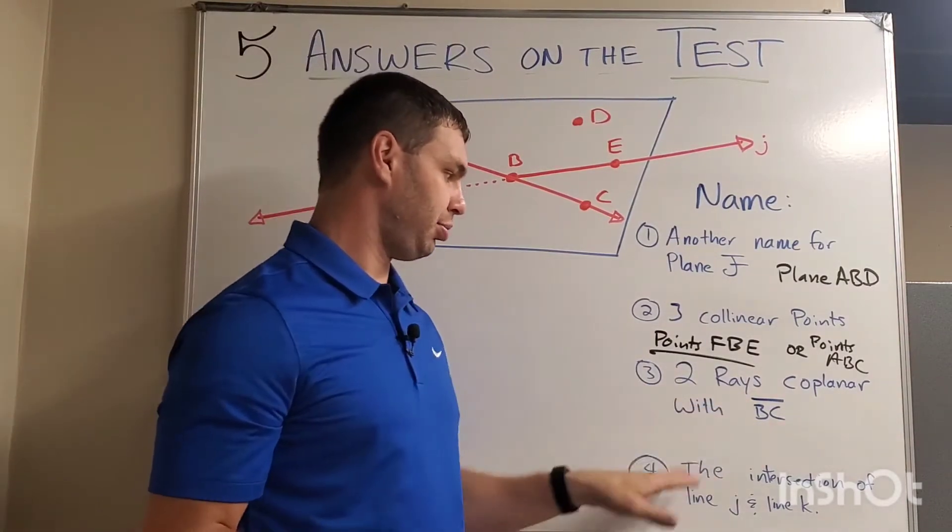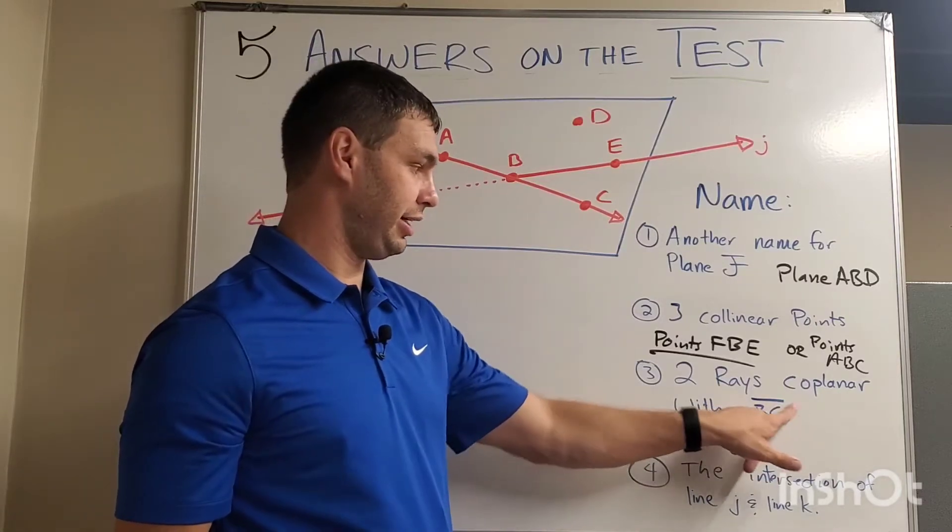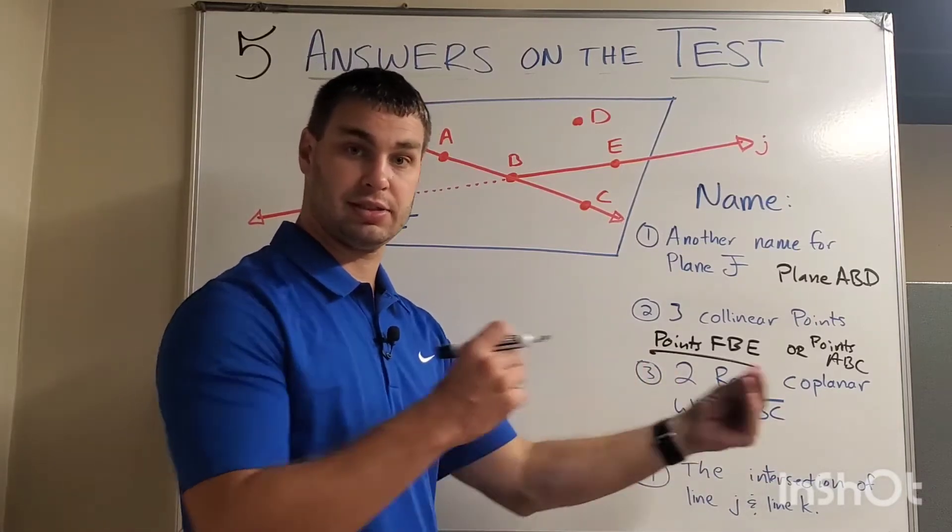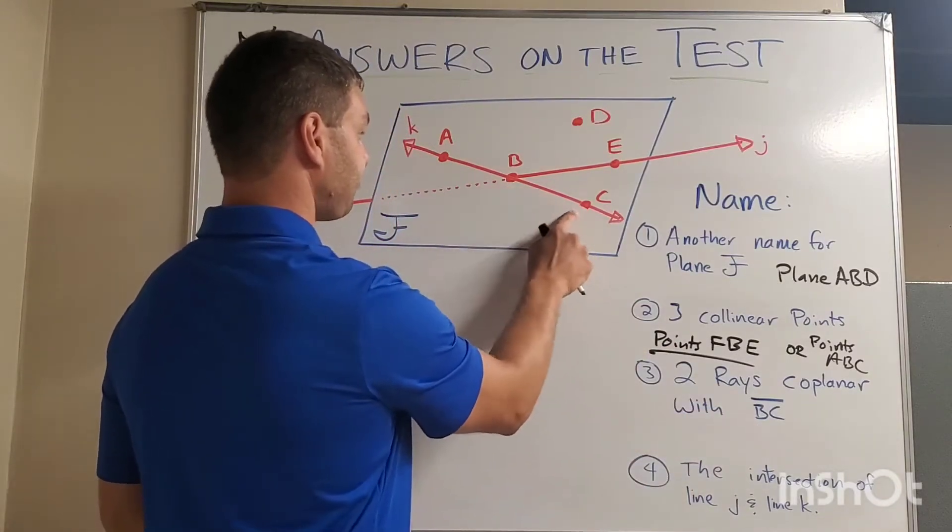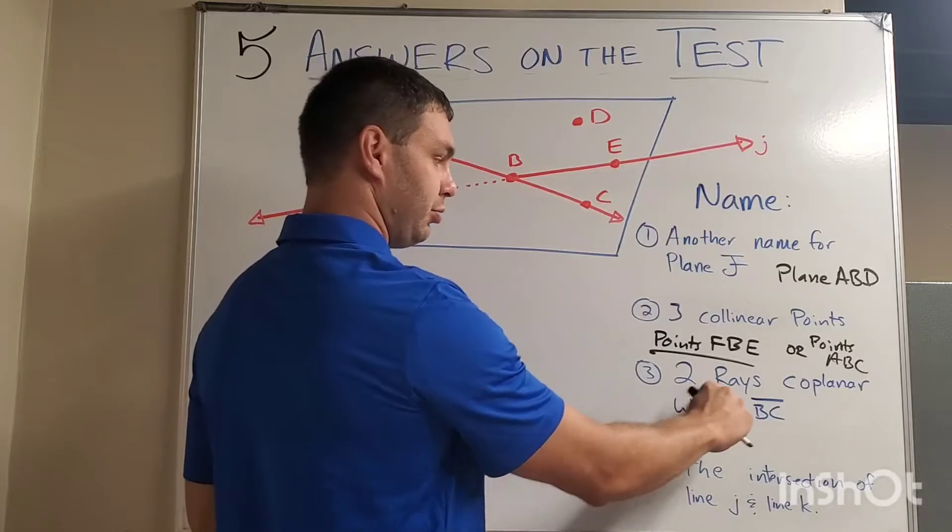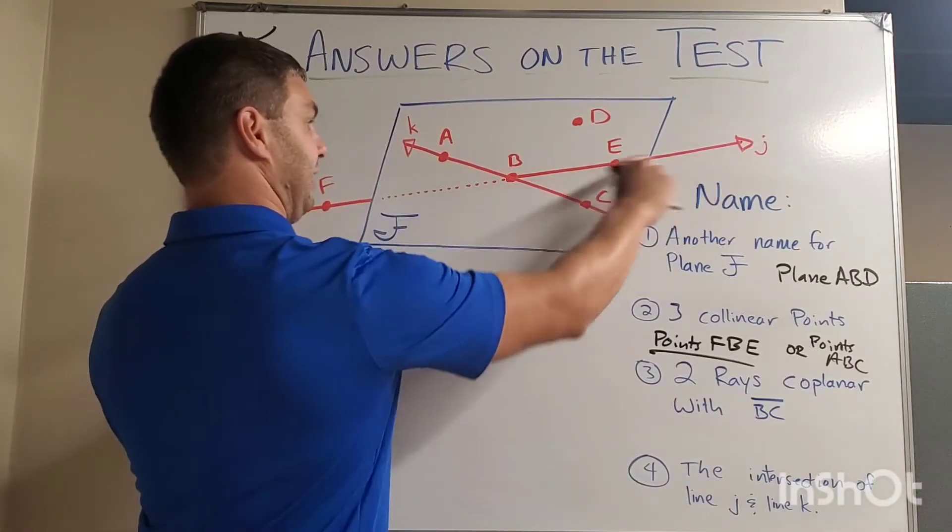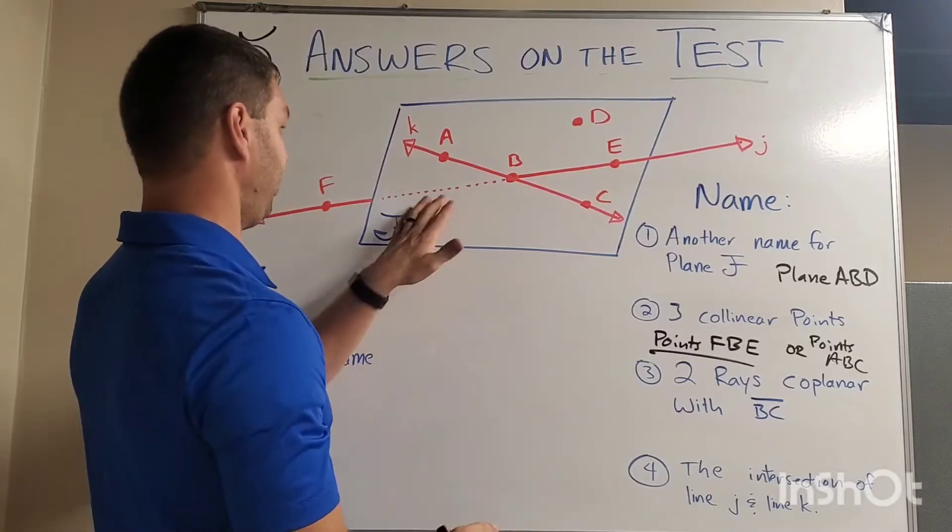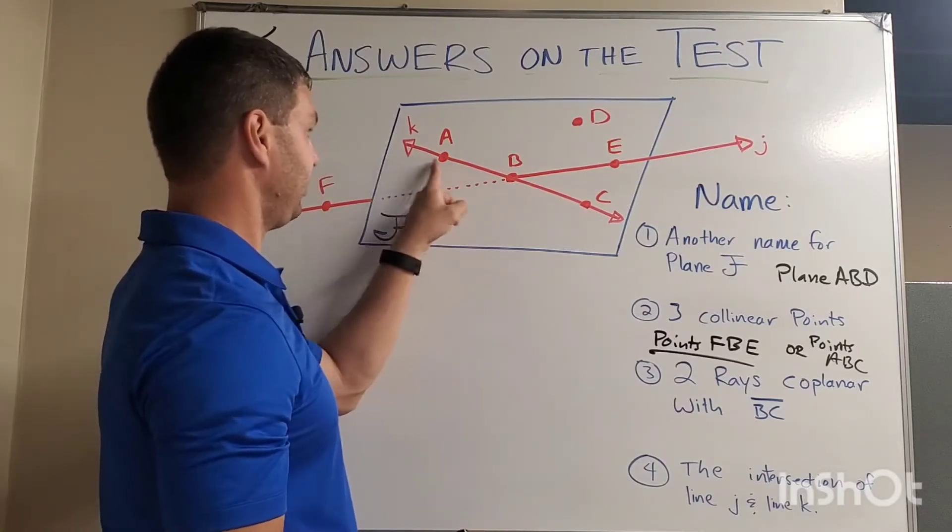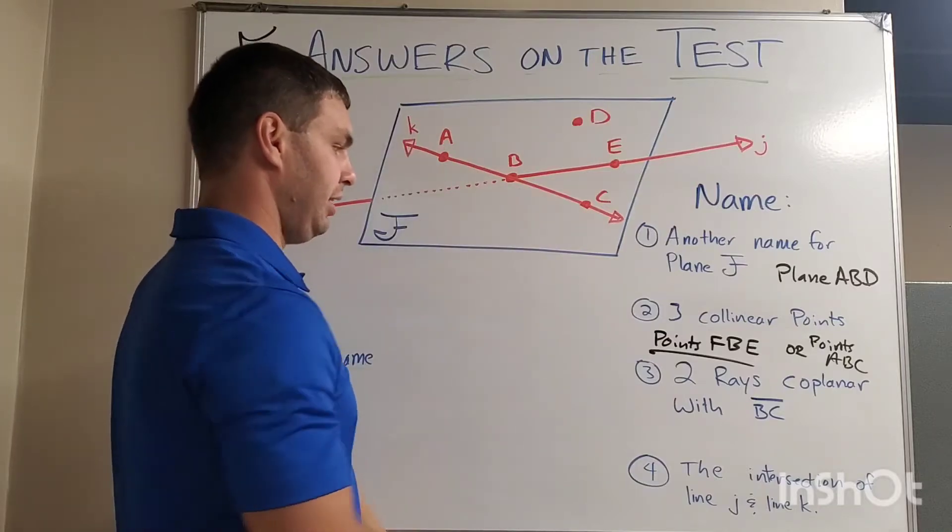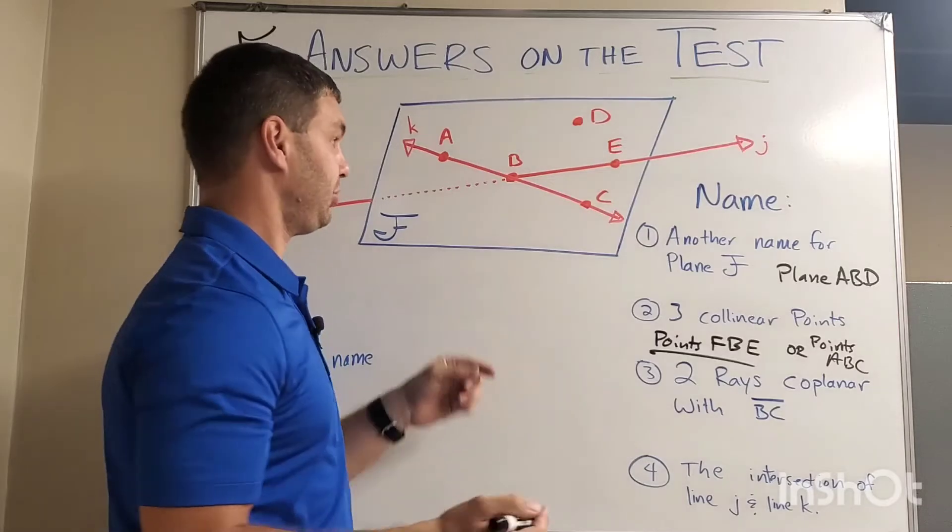Number three, name two rays that are co-planar with segment BC. I know this is a segment because there's no arrows above that bar. It's just the bar. So let's look at BC here. That's this one. And BC, it says it wants two rays that are co-planar. So, we said earlier that this line is not co-planar because it's sticking through that paper, right? The dotted line means it's on the other side. So, I am only down to this line here, line K. And I need two rays, basically, that are on line K. And we have a bunch of different options.